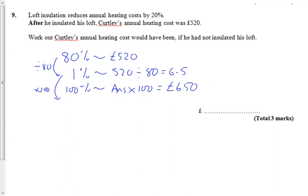So the final answer is £650. This is what we call the reverse percentage problem, because we're not starting with 100% — we're starting with the amount after it had been reduced, or possibly increased. We need to get back to the original, back to the 100%, what it was before the reduction happened.